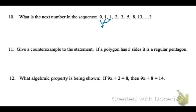On this first one, when you're looking for the sequence, the first two numbers, 0 and 1, if you add them together, you get 1. If you add the next two numbers together, 1 and 1, you get 2.